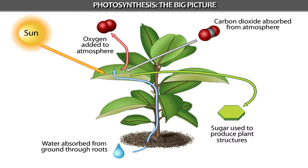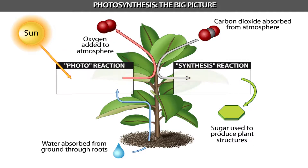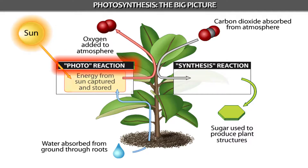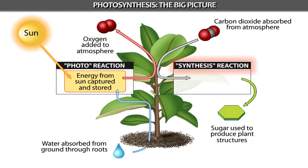Photosynthesis is best understood as two separate events. In the photo segment, light is captured and temporarily stored in energy storage molecules. During this process, water molecules are split and produce oxygen.